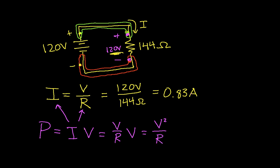Okay, so in this example, my power is equal to 120 volts squared divided by 144 ohms. And when I compute this, this turns out to be 100 watts, which is good. That's what I started with.